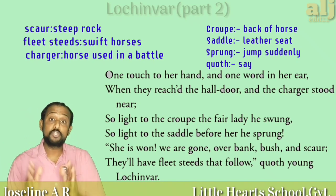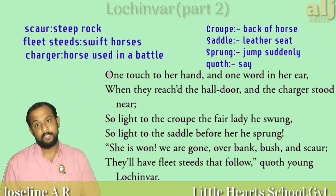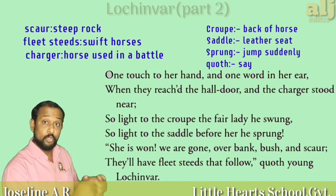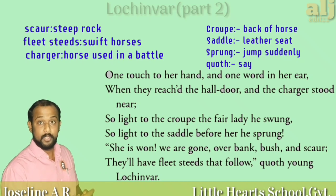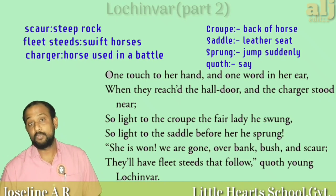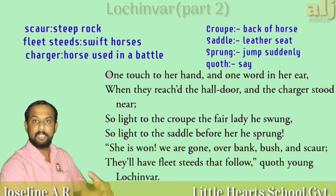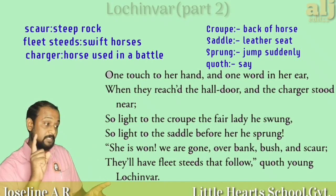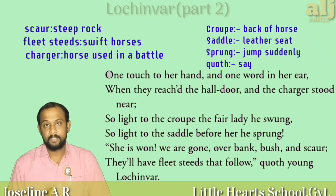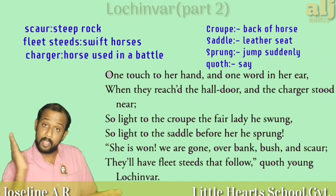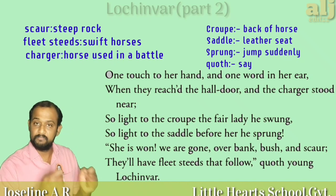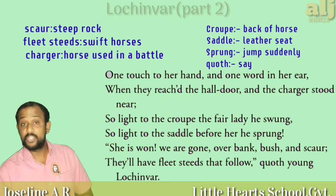He told Ellen: 'We are gone over bank, bush, and scar.' Scar means steep rocks. He told her to hold him tightly because now they were going to move fast over banks, bushes, and steep rocks. He also warned her that Ellen's father and relatives would definitely follow with their horses — they would chase them. So they must have fleet steeds that follow.